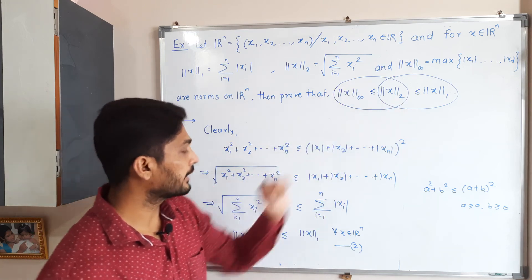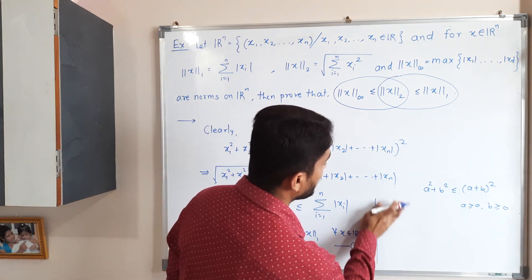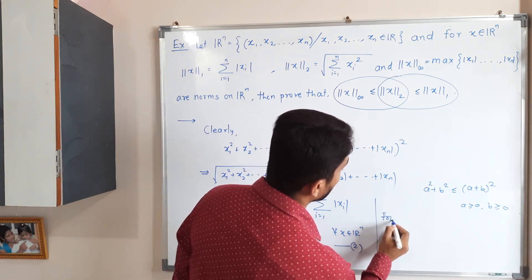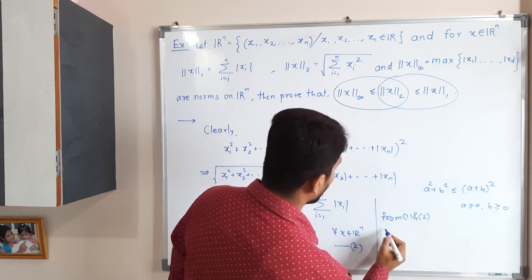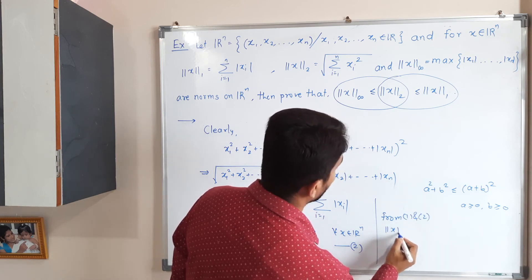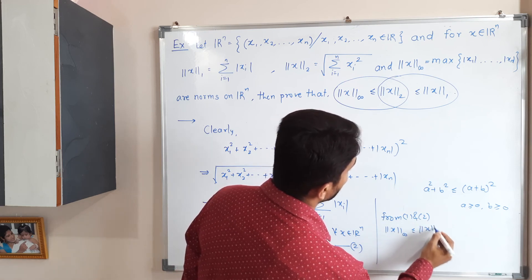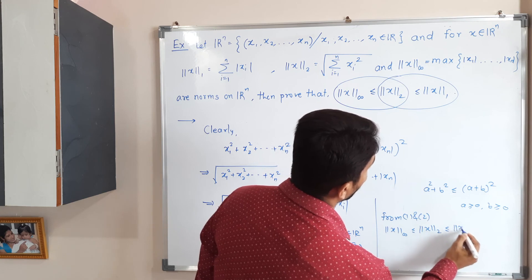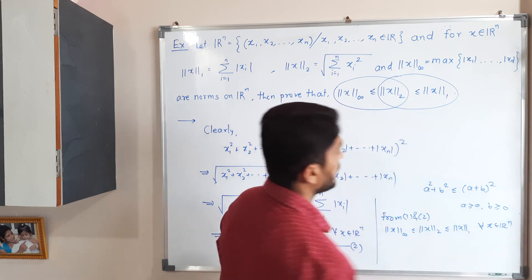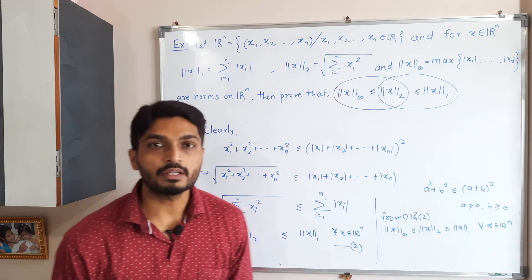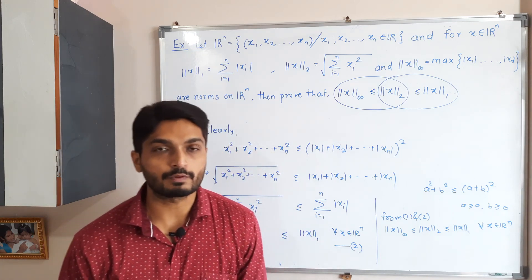Combining inequality one and inequality two, we get the final result: ‖x‖∞ ≤ ‖x‖₂ ≤ ‖x‖₁, and this is true for all x ∈ ℝⁿ. In this way we have completed this example.